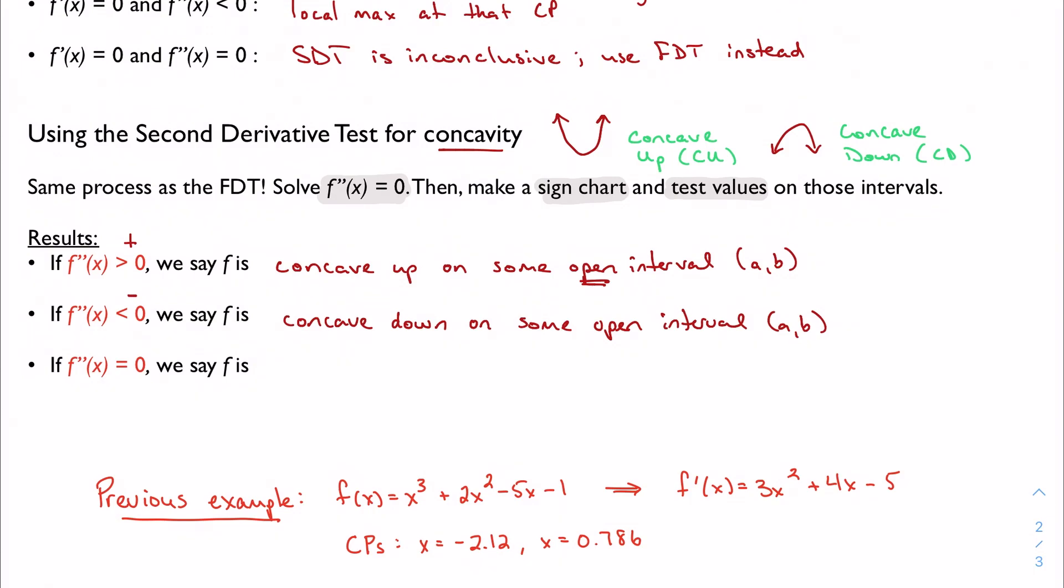And if F double prime is equal to zero, which is what I'm solving by getting this, we say F is possibly an inflection point. All this means is that we're moving from concave down to concave up, or vice versa. We're changing concavity at that point. This is just a change in concavity.